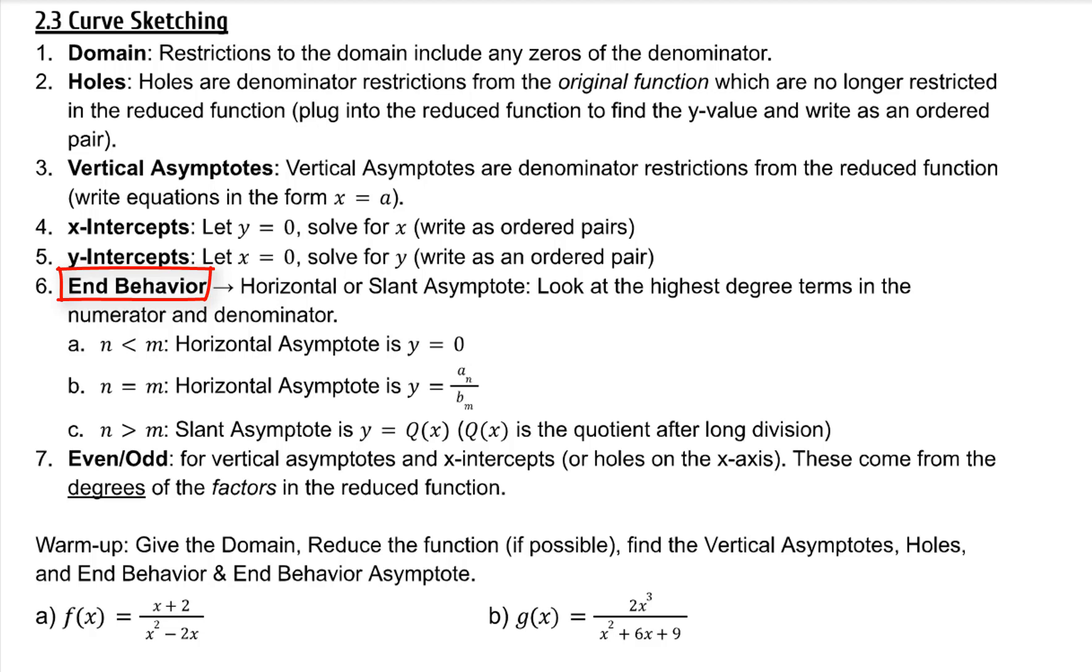If your function is rational, here's what we know about horizontal asymptotes, but for end behavior you can just use limits at infinity. Even or odd helps for vertical asymptotes and x-intercepts or holes on the x-axis to help us know what the behavior is.